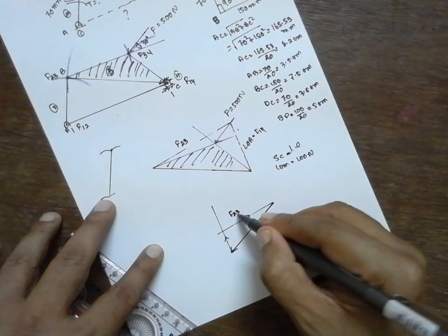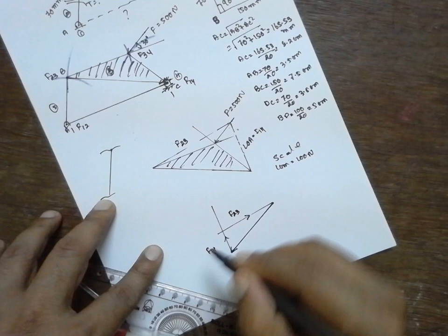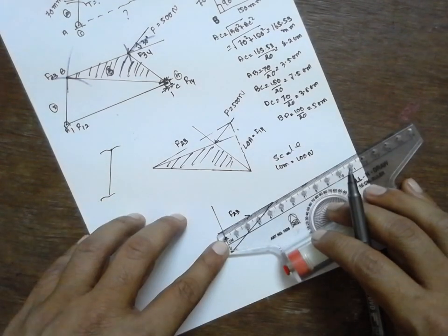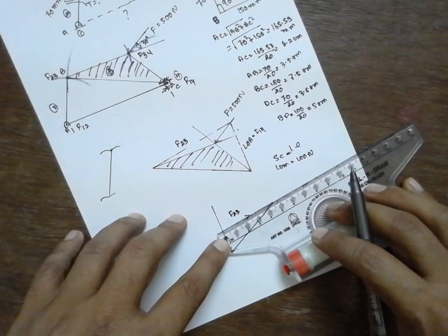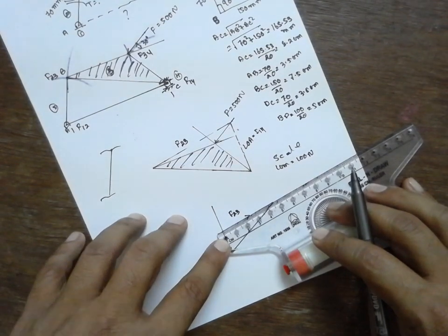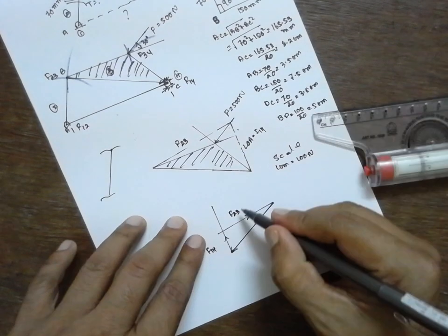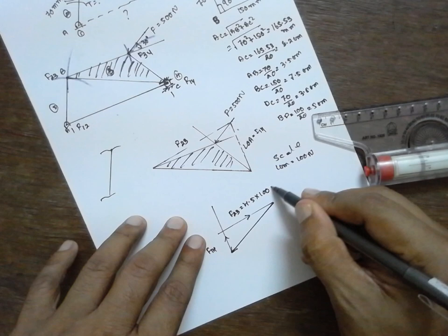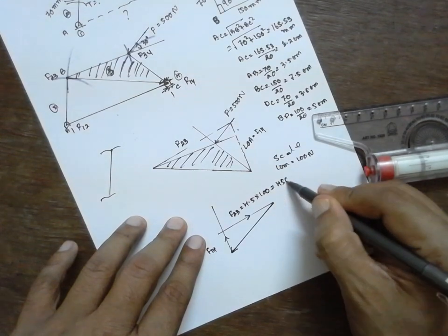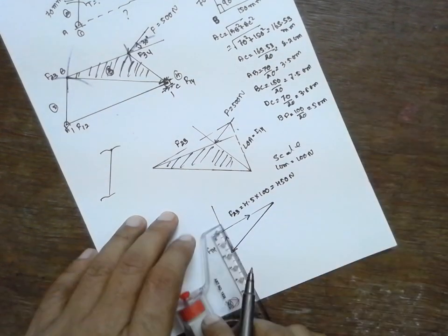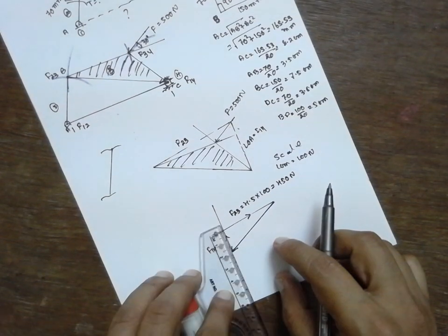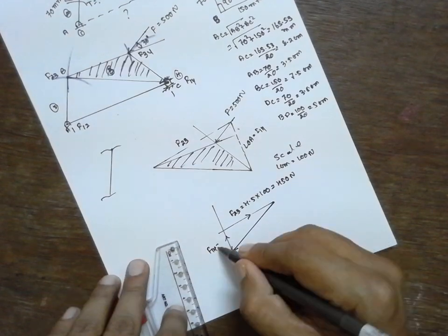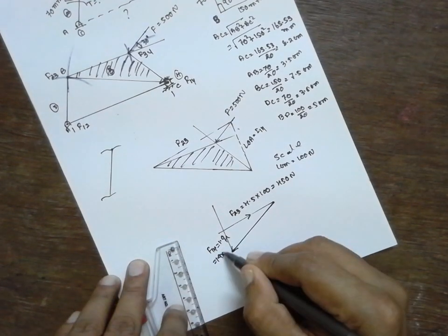If you measure this part, F23, it is 4.5, 4.5 into scale, that is 100, it will be 450 Newton. Now if you measure this one, this part, it will be 1.9, that is 1.9 into 100, 190 Newton.